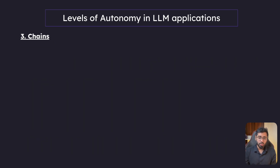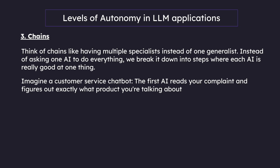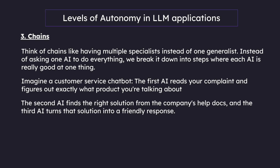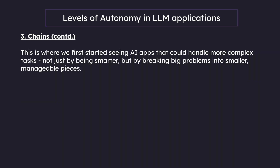This brings us to the next level of autonomy: chains. Think of chains as having multiple specialists instead of one generalist. Instead of asking one AI to do everything, we break it down into steps where each AI is really good at one thing. Imagine a customer service chatbot where the first AI reads your complaint and identifies the product, the second AI finds the right solution from help docs, and the third AI turns that solution into a friendly response. Each step is simple, but together they create a much smarter system.